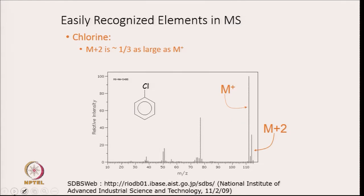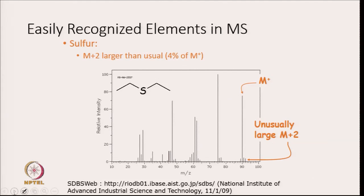Similarly, if the molecule has a chlorine atom, M+2 is one-third as large as the M+ ion — you can see that M+2 is one-third of the M+ ion, and that tells you a chloro group is present in the molecule. If the molecule has a sulfur atom, you can see M+2 is larger than usual — it is almost 4% of the M+ ion. So, the M+2 peak is generally larger in comparison to what you have observed, and that is almost 4% of the M+ peak.